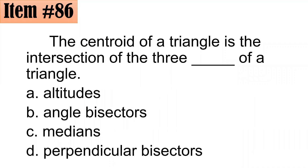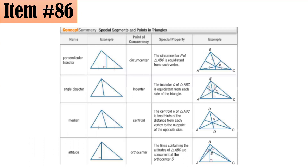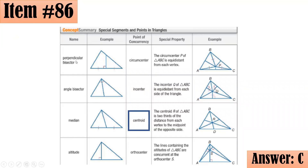Item 86: The centroid of a triangle is the intersection of the 3 what? The intersection of the 3 perpendicular bisectors is the circumcenter. The intersection of the 3 angle bisectors is the incenter. The intersection of the 3 medians is the centroid. The intersection of the 3 altitudes is the orthocenter. So letter C, medians, is the correct answer.